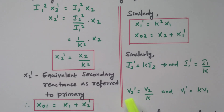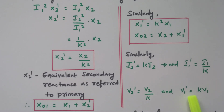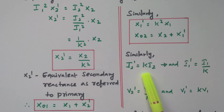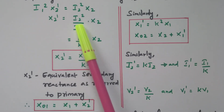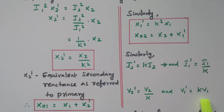Similarly, we can refer the current and voltage. I2 dash equals K times I2; I1 dash equals I1 divided by K. V2 dash equals V2 divided by K; V1 dash equals K times V1. We already discussed that referring to the primary means multiplied by K, and secondary means divided by K. But for current it is reversed — primary means divided by K, secondary means multiplied by K. This is because while increasing the voltage, the current decreases, as I1/I2 equals N2/N1.